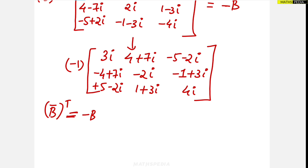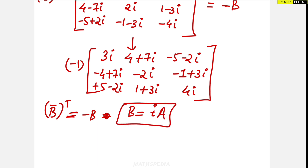Both matrices are exactly the same, so we can say that B conjugate transpose equals −B. Since B = i·A, we have shown that i·A is a skew-Hermitian matrix.